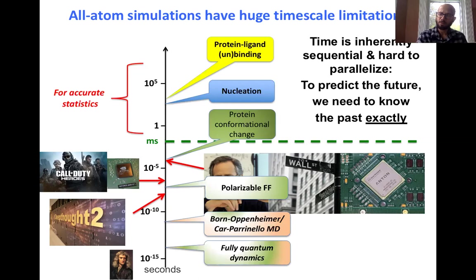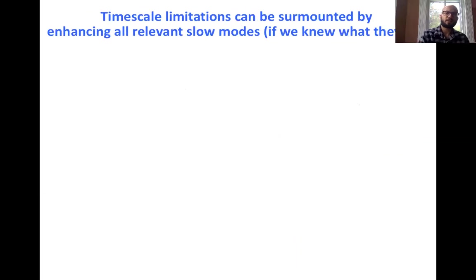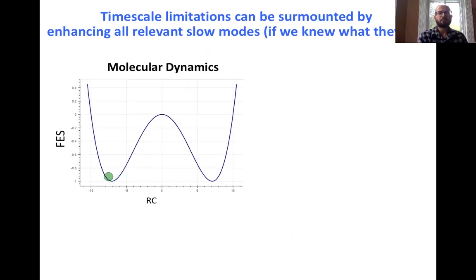The reason this problem is theoretically so hard is that unlike dealing with larger systems — where you can just use bigger and bigger supercomputers — for the time scale problem you are stuck because time is inherently sequential. You cannot recruit 100 graduate students and say you look at t=1, you look at t=2, and make a soup out of it to get very long time scales. In order to predict the future you need to know the past exactly. The core of the research in my group is: how much of the past do you need to know in order to predict the future? This is what we call the reaction coordinate in physical chemistry — it captures all the relevant slow degrees of freedom.